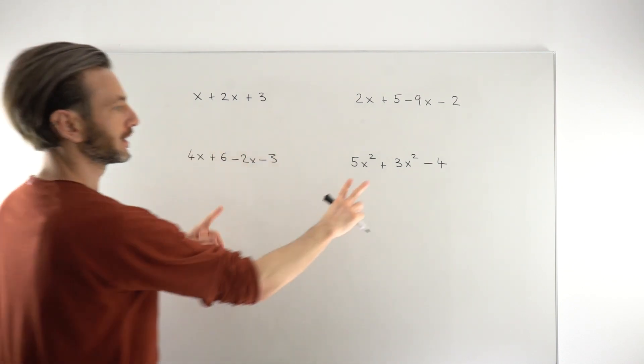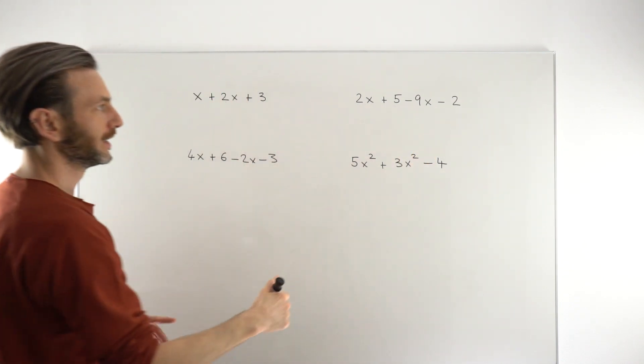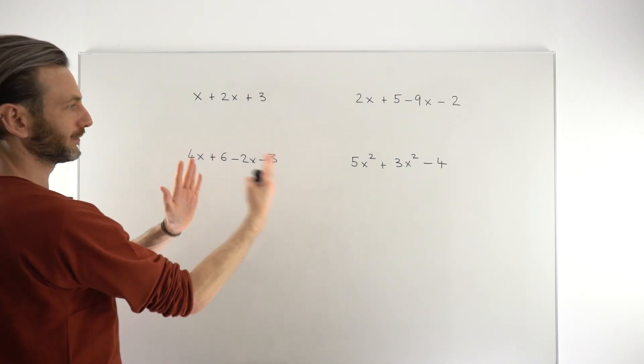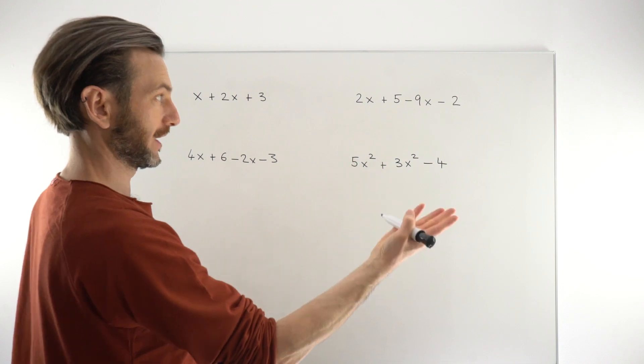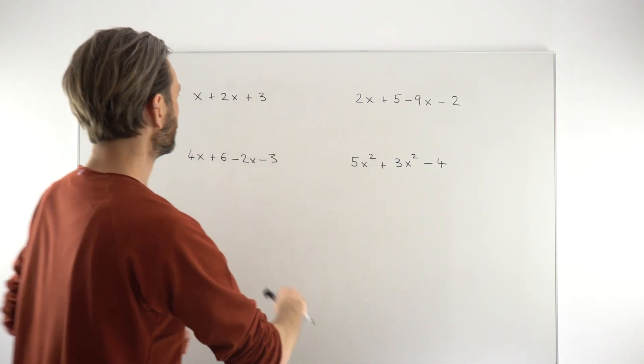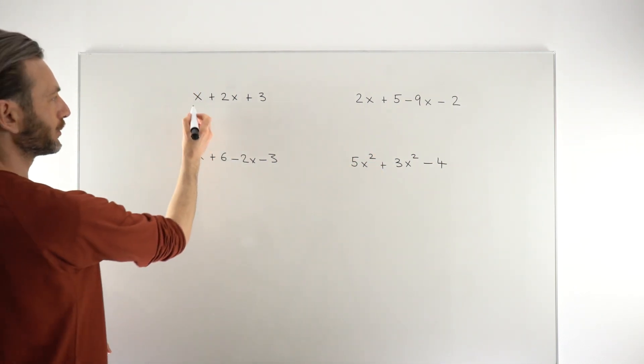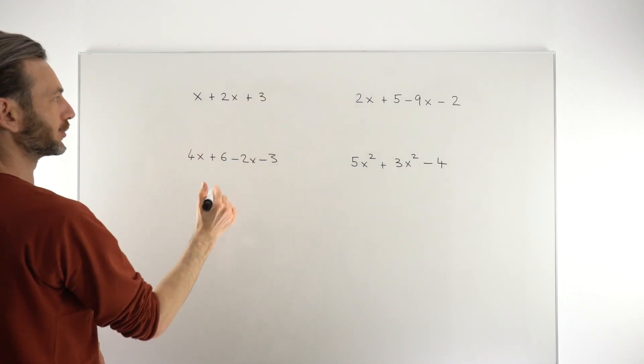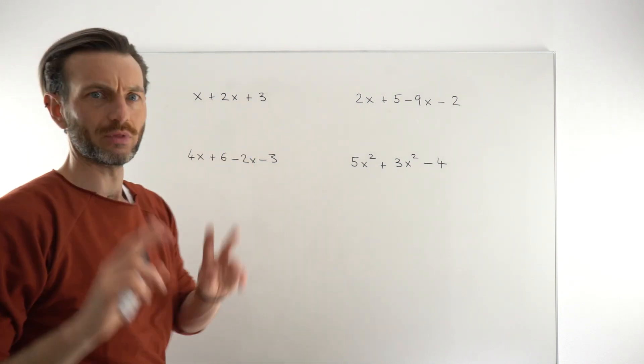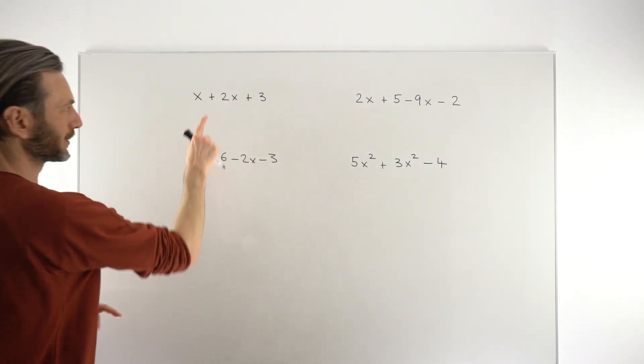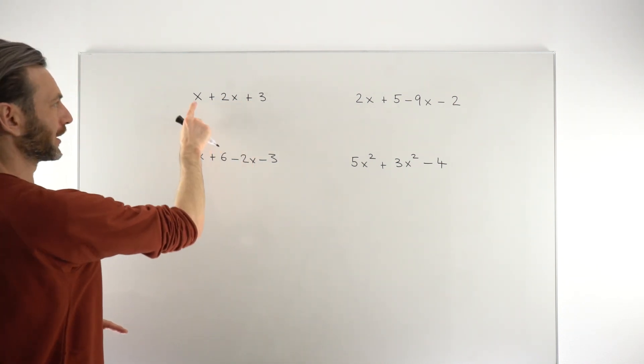We've got these different formats of examples here, but essentially the way we're going to simplify these is the same in each one. We're just going to look for things that look the same, the like terms, and combine them. Just remember that in algebraic expressions we call each of the parts, the bits that are separated by the plus or the minus, a term.